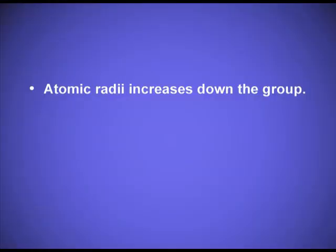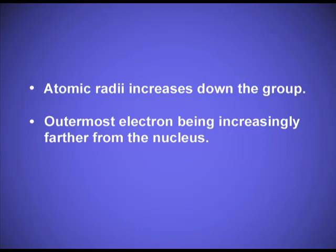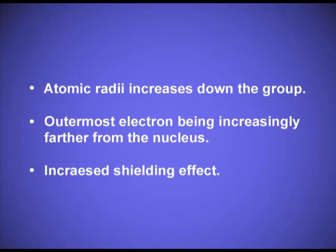To revise: ionization enthalpy decreases down the group because atomic radii increases, meaning the outermost electron is increasingly farther from the nucleus. There is also an increased shielding effect — as the size increases down the group, the inner shells behave as a wall or screen between the nucleus and the valence shell, making it very easy to remove the valence electron.